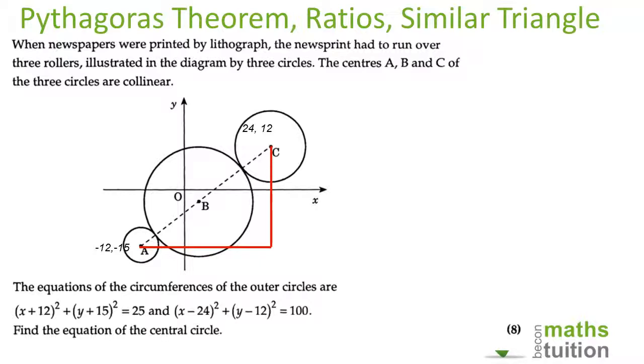From A, draw a line parallel to the x-axis, and another one from B parallel to AD. From the center of circle A to the y-axis is 12, and from the y-axis to the center of circle C is 24.